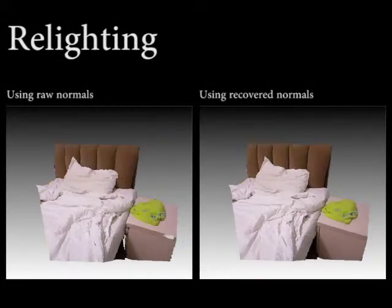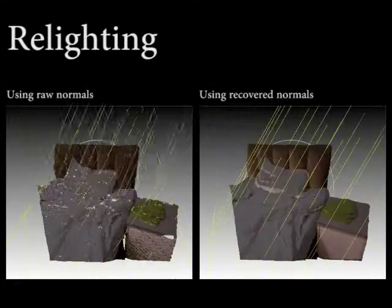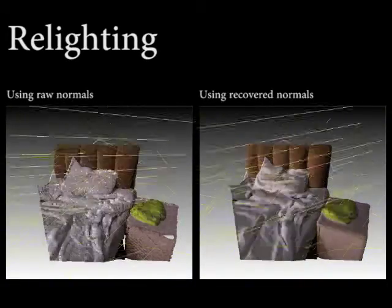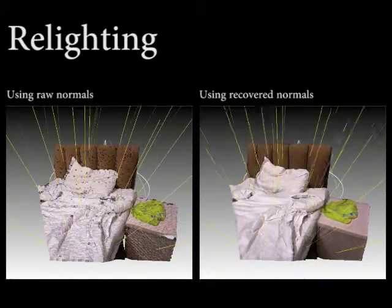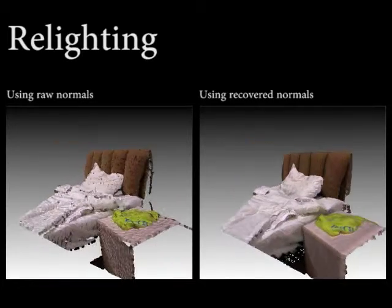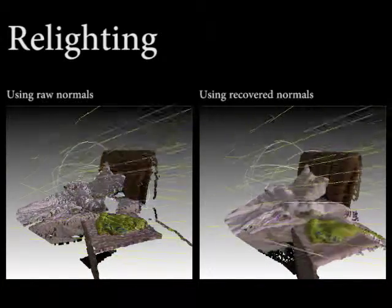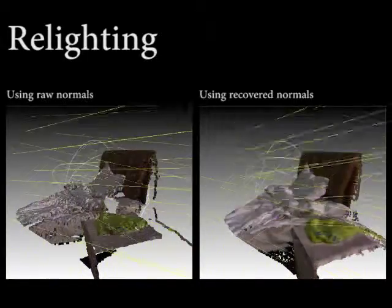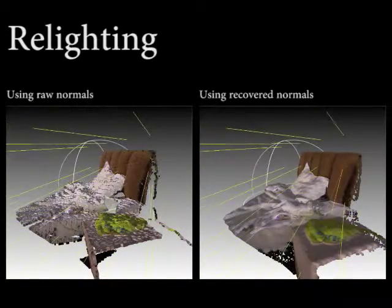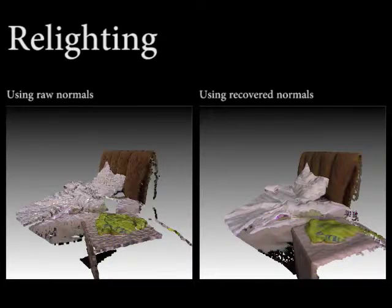The recovered normals are also important for realistic relighting. First, we show the bedroom example. On the left, we relight the scene using raw normals computed from the Kinect point cloud. On the right, we relight the scene using normals recovered by our technique. On the left, dark dots can be seen due to the noisy normals. On the right, the correct normals result in realistic shading details as the light rotates.